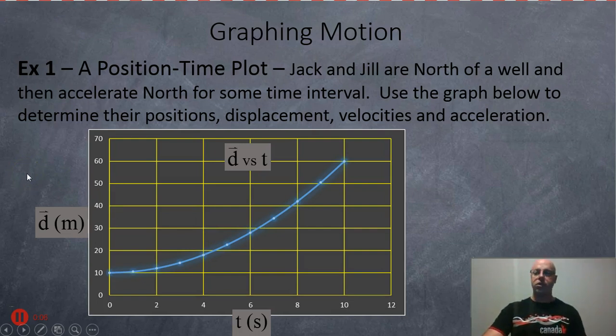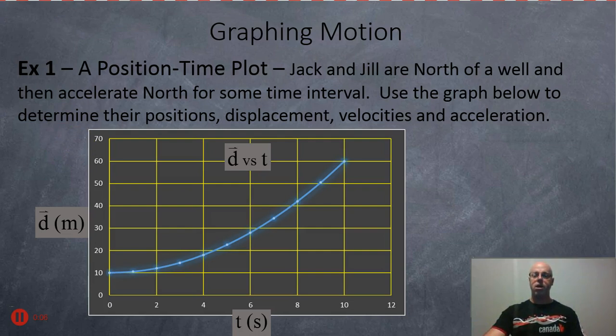Jack and Jill are north of the well and then accelerate north for some time interval. Use the graph below to determine their positions, displacement, velocities, and acceleration.